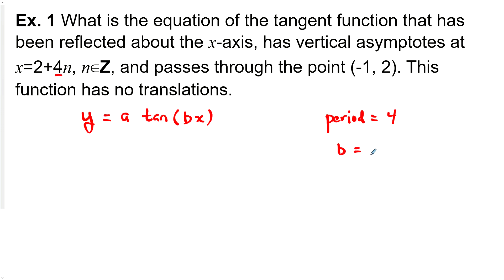What would be our b value then? Remember for sine and cos, b was equal to 2 pi divided by the period. But tan has a period of pi to start with. So it would be pi divided by the period. And in this case, that would be pi divided by 4. So that's our b value.